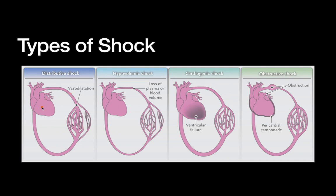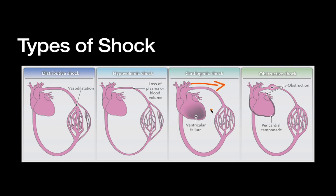Distributive shock is a problem where the heart works fine and you have an appropriate blood volume, but there's vasodilation, so blood is filling a bigger container and you get low blood pressure. This is most commonly caused by sepsis or septic shock. Hypovolemic shock, on the other hand, has a normal vascular container and a heart that's working well, but you've lost plasma or blood volume — caused by things like dehydration or bleeding.